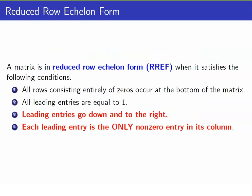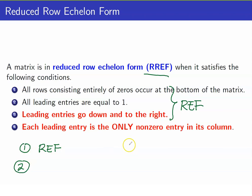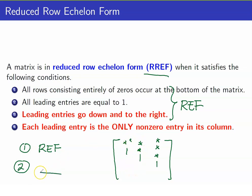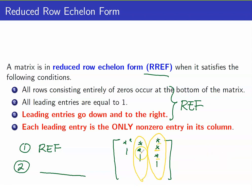Next, we are now going to reduce a matrix to its reduced row echelon form. Take note that because a matrix in RREF is also in REF, the first step in reducing it to RREF is to reduce it first to its REF. Recall the difference between REF and RREF: the only difference is that in REF you may have some entries above your leading entries. So for the second part of reducing a matrix into its RREF, you just have to zero those out. You start with the last columns and zero them out, then go backwards, and you just use replacement.